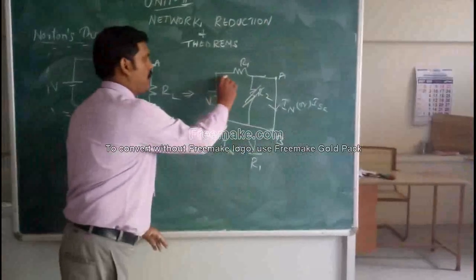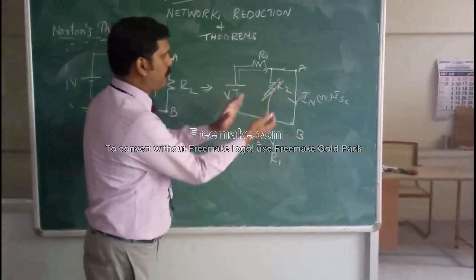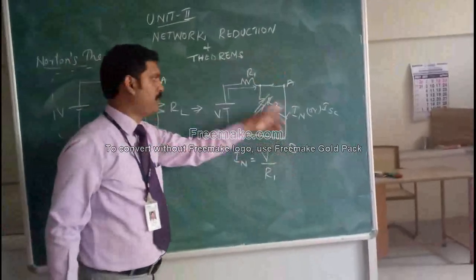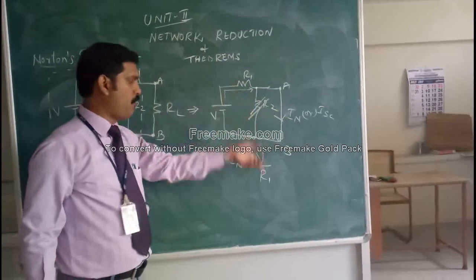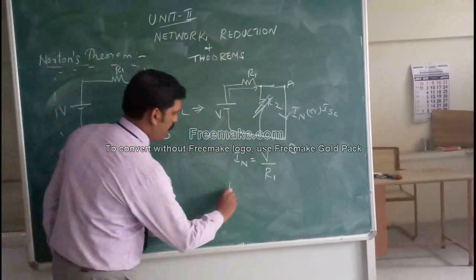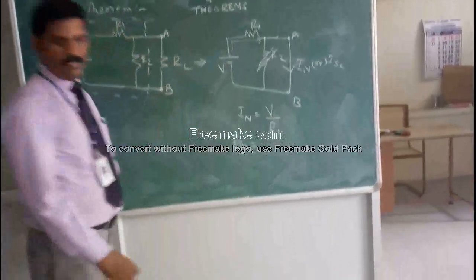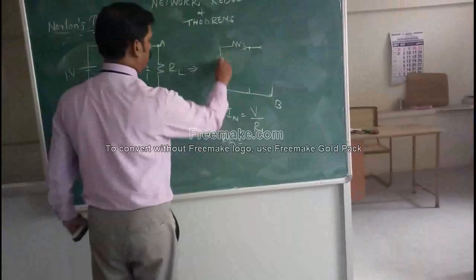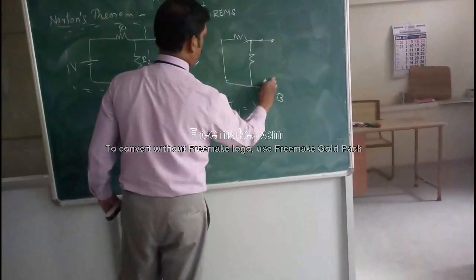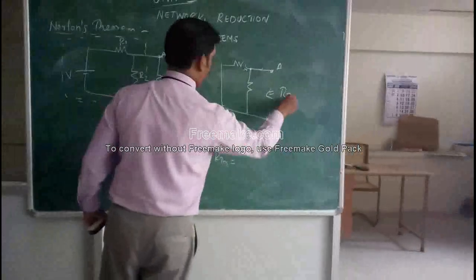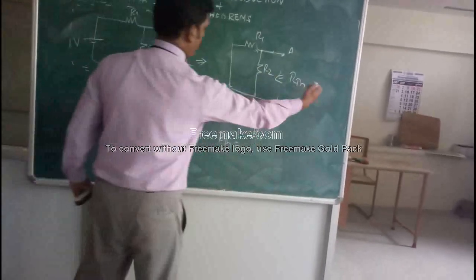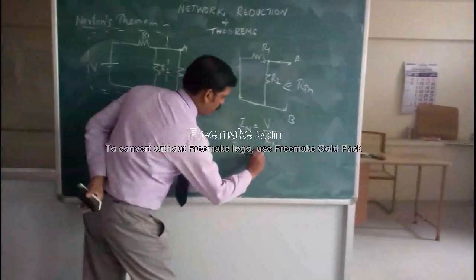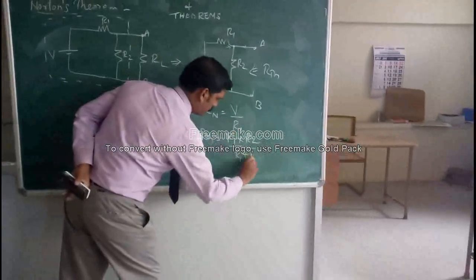Current coming out of the source will look into the branches; the branch with R2 has resistance, so current will not choose that path and will take the short-circuit path. Thus the net resistance in the circuit is R1, and IN equals V/R1. Now we need to find RTH. To find RTH, we short-circuit the voltage source and look back from the open terminals A and B. RTH equals R1 parallel with R2, which is R1·R2 divided by (R1 + R2).